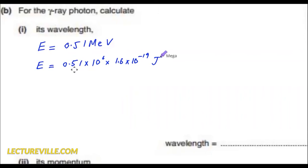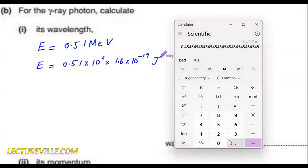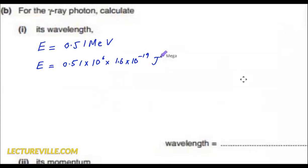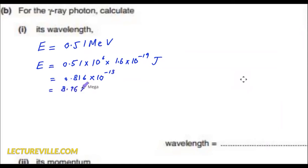So 0.51 multiplied by 1.6 gives 0.816. So it is 0.816 into 10 to the power minus 13, which becomes 8.16 into 10 to the power minus 14 joules.